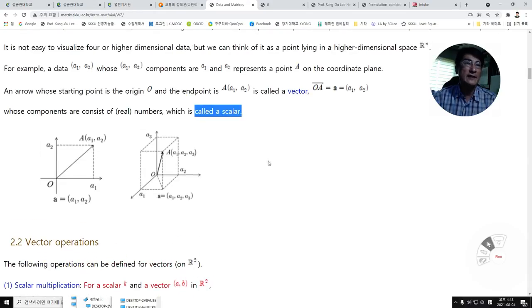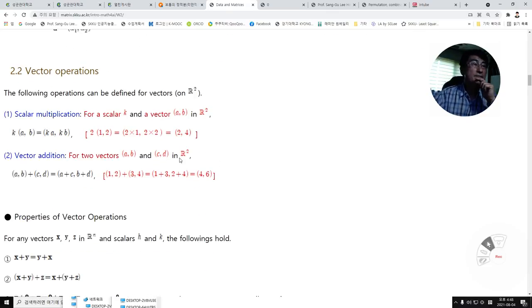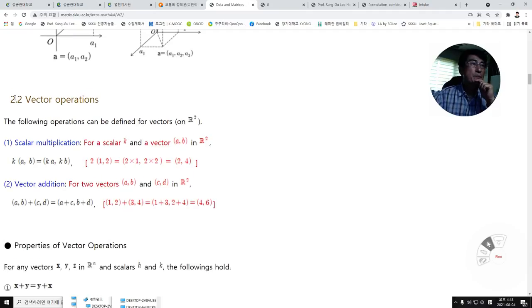In R³, a vector OA is an arrow whose origin is O and the endpoint is point (A₁, A₂, A₃) in R³. Next, vector operations.